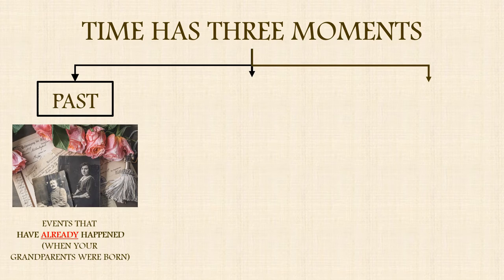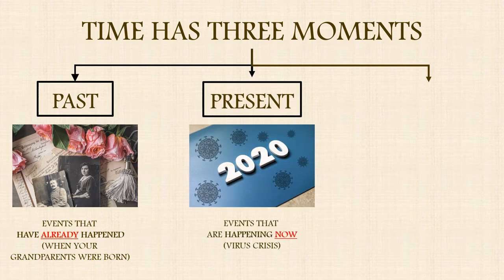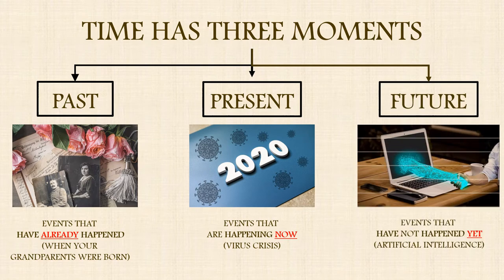past refers to events that have already happened — for example, when your grandfather was born. Present refers to events that are happening now, for example the virus crisis that we are suffering. And future refers to events that have not happened yet, for example artificial intelligence.